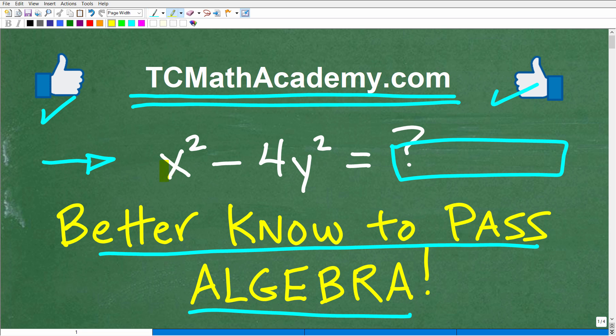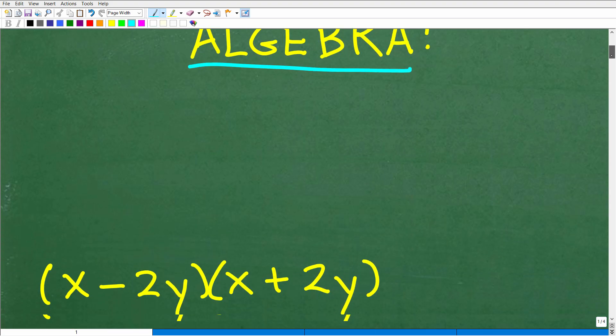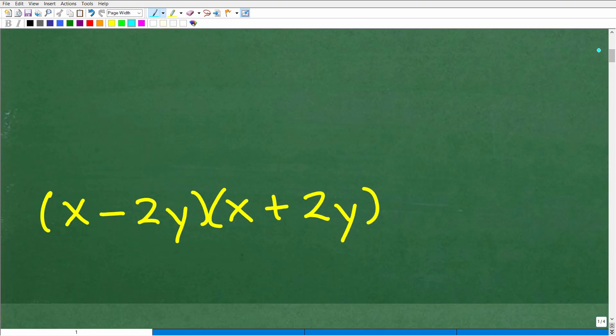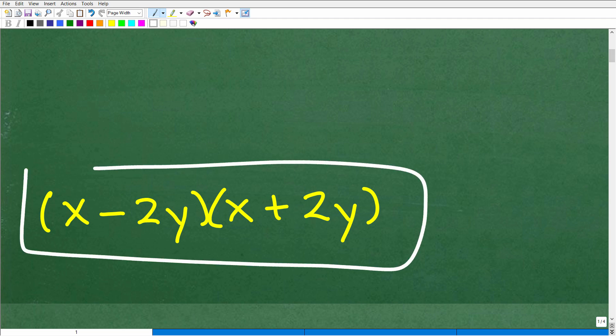Okay, so again, we have x squared minus 4y squared. We're looking to factor this situation. And let's go ahead and take a look at the answer right now. Okay, so here is the correct answer. You have x minus 2y, and this would be in parentheses, times x plus 2y. If you wrote x plus 2y times x minus 2y, that is perfectly fine as well. But this is the answer.